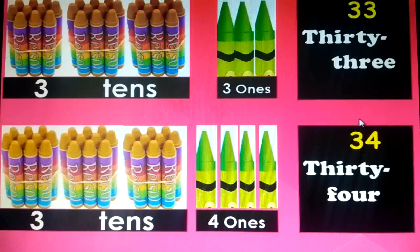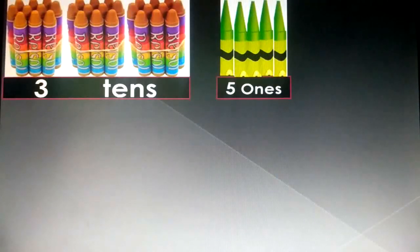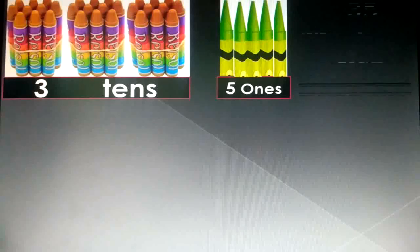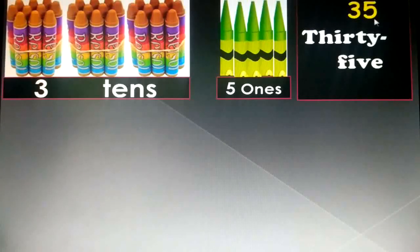33, 34. Next: 1 ten, 2 tens, 3 tens, and 1, 2, 3, 4, 5 ones. 3 tens and 5 ones is equal to 35. T-H-I-R-T-Y, 30, dash, F-I-V-E, 5. In number 35, we are having 3 tens and 5 ones.